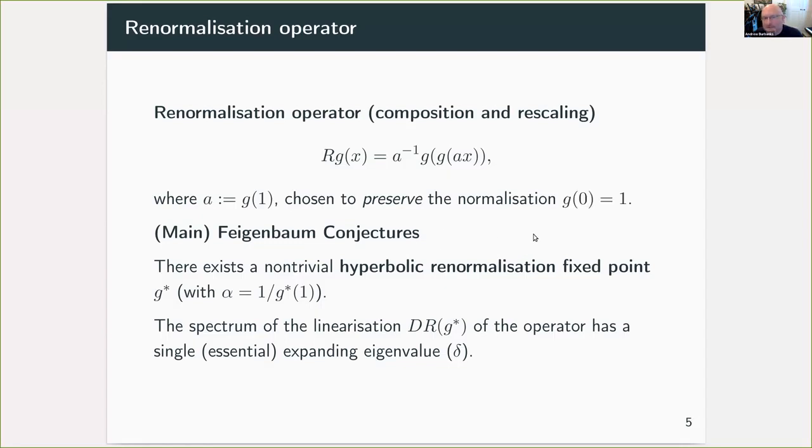Feigenbaum made a number of conjectures about this operator that helped to explain the universality. The chief ones are that the operator has a non-trivial fixed point in a suitable space of functions, that this fixed point is hyperbolic, and that the spectrum of the linearization has essentially one expanding eigenvalue.